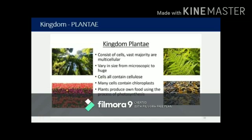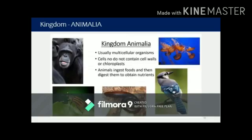Moving on to kingdom Plantae: it consists of cells and the majority are multicellular — all plants. They vary in size from microscopic, like phytoplanktons, to huge. All the cells will contain cellulose, and many cells will contain chloroplasts. Plants have the special feature that they can produce their own food with the help of photosynthesis — using sunlight to produce glucose. All plants are autotrophic; that is a very important distinguishing feature of kingdom Plantae.